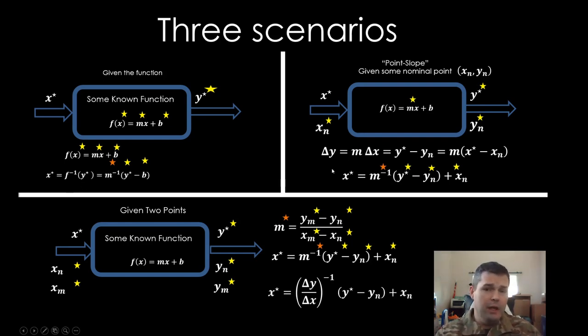The second method they can give you is what we refer to as point-slope. Now they don't give you the entire function but they give you the slope and they give you a point, some nominal X and Y coordinates. From that you're able to solve for X star given the point slope solution.